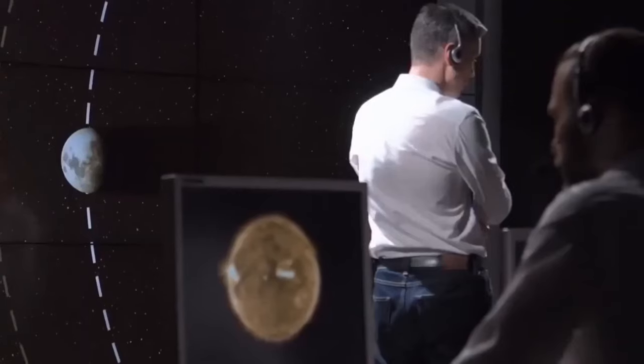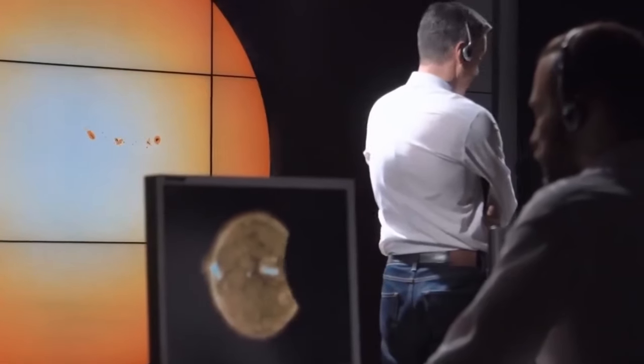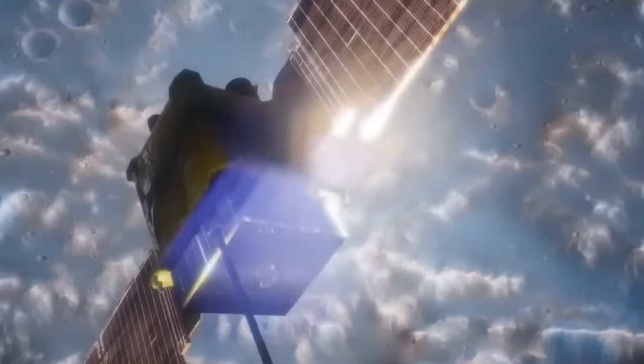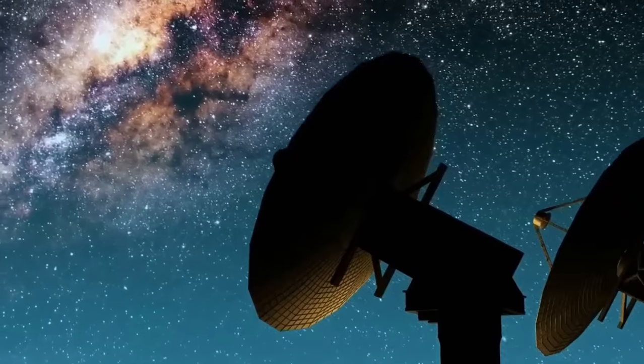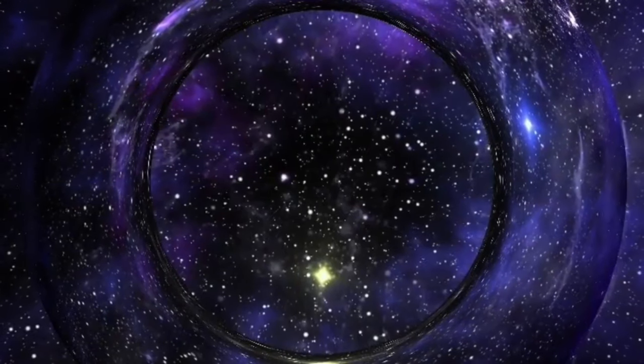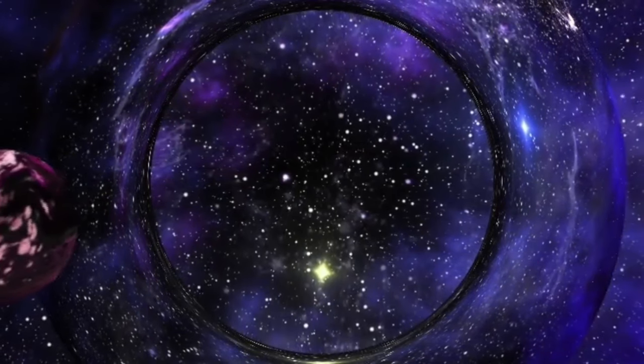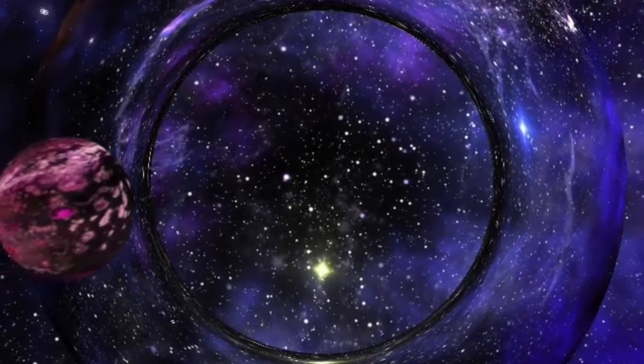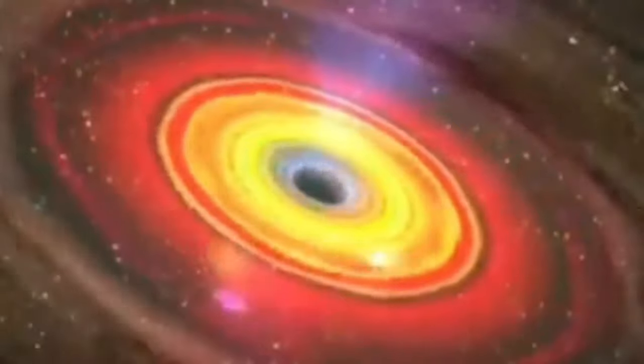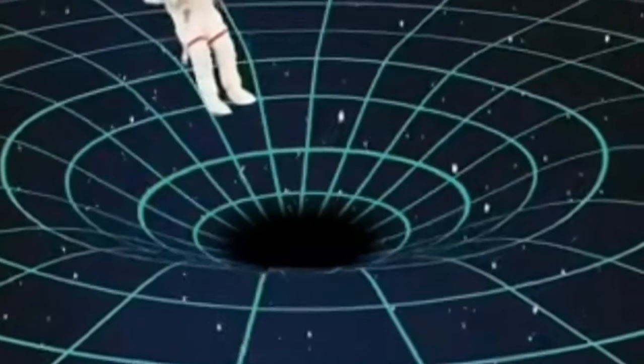Black holes grow by consuming gas, dust, and even entire stars. However, they are not always active feeders. When they run out of material, they enter a dormant phase. For instance, our Milky Way's supermassive black hole is currently in a quiet phase. But when galaxies collide, they can reignite into quasars.